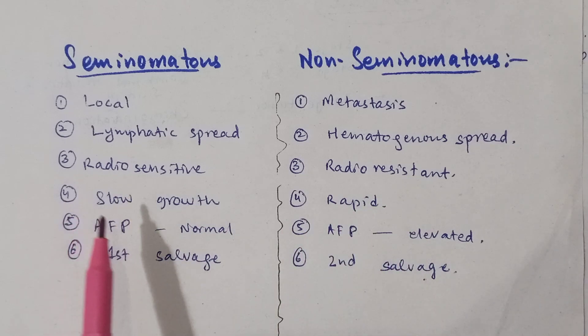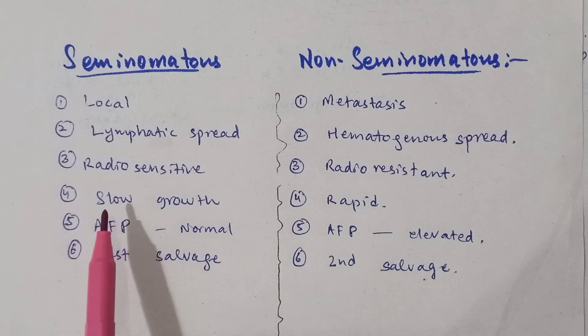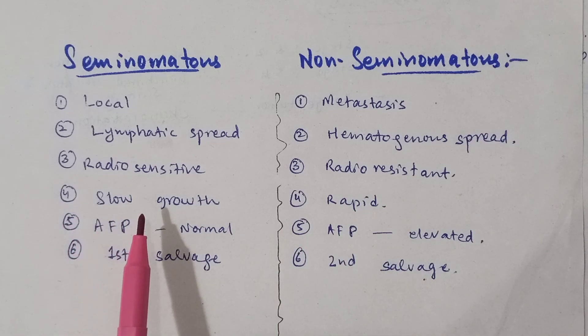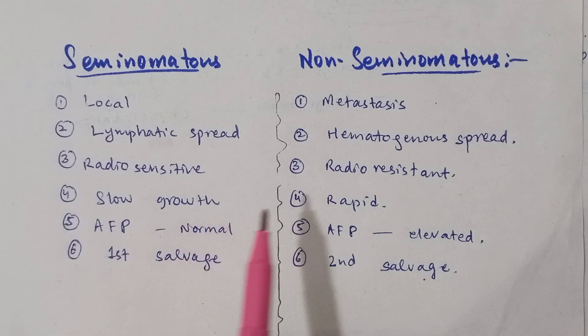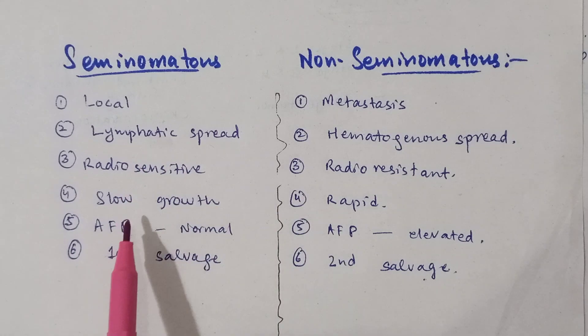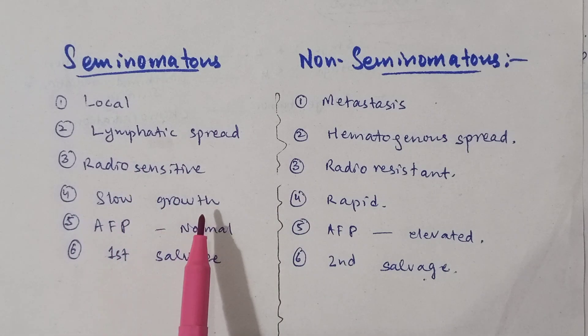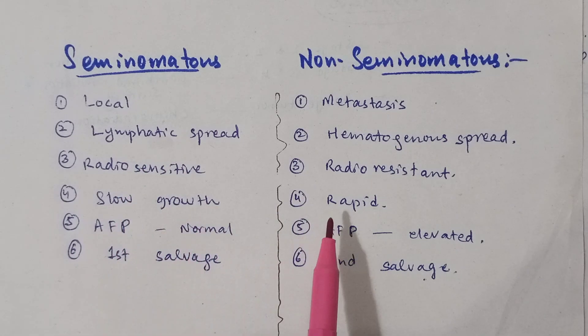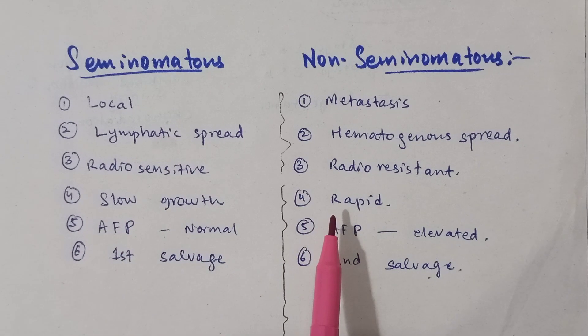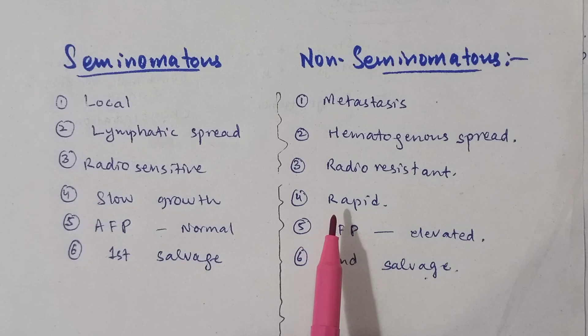Seminomatous tumours show slow growth — these are slow-growing tumours. Non-seminomatous are rapidly growing tumours.